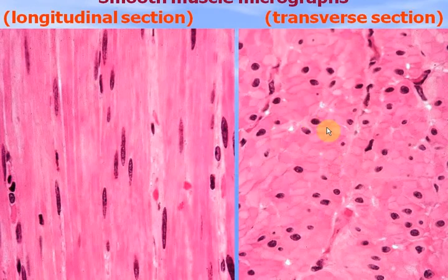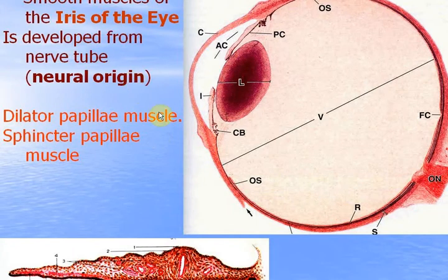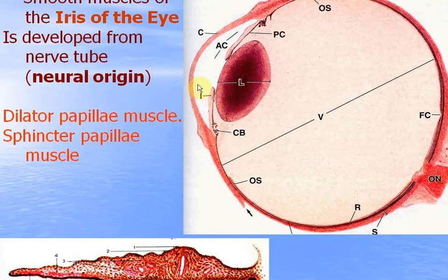At longitudinal section you see long cells with rod-shaped nuclei in the middle. At transverse section you see round pink sections, and the biggest of them have rod-shaped nuclei. There are two unique small muscles in the iris of the eye: the dilator pupillary muscle and the sphincter pupillary muscle. They develop from the nerve tube, so they have neural origin.